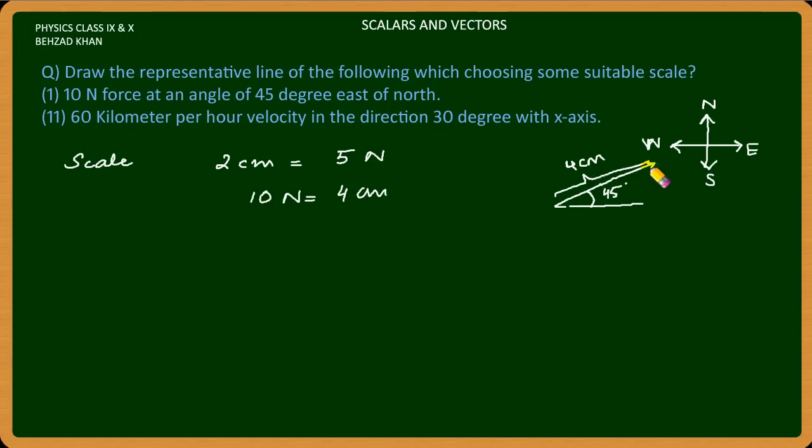This is 6cm. So, this is our result. Let's look at the other one. 60 km per hour velocity in a direction of 30 degree with x-axis.